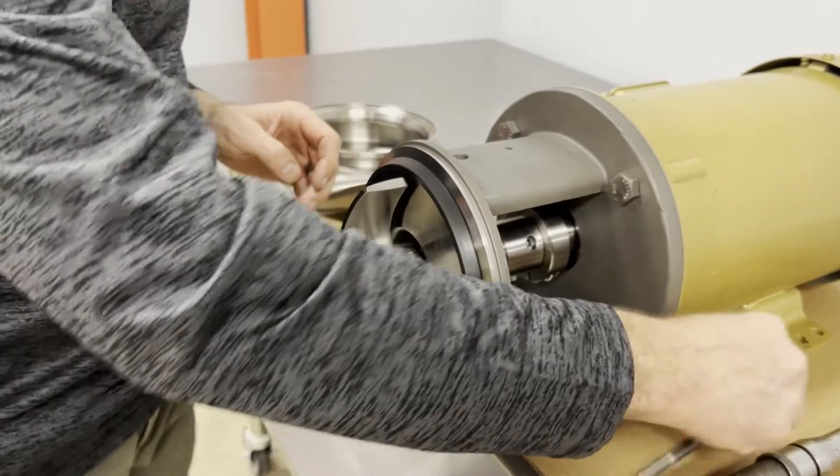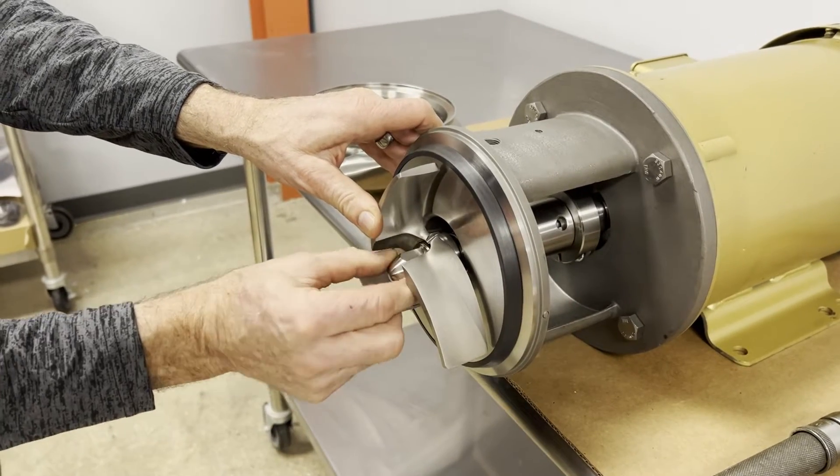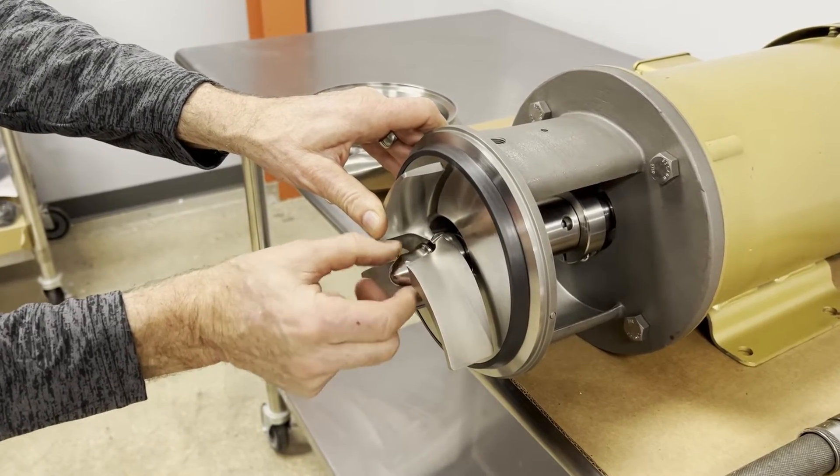Now the impeller is spring loaded from the seal spring, so you want to push that back and remove the nut the rest of the way.